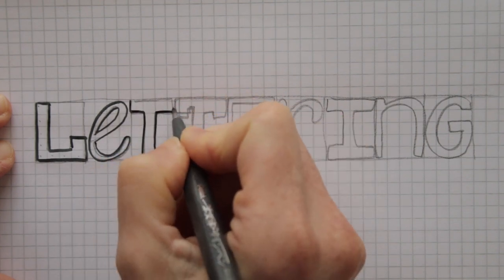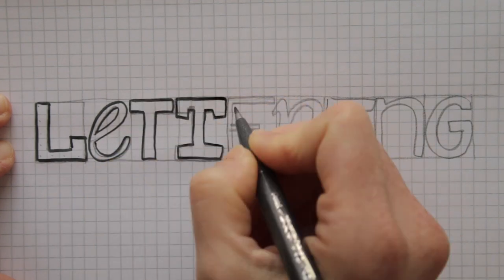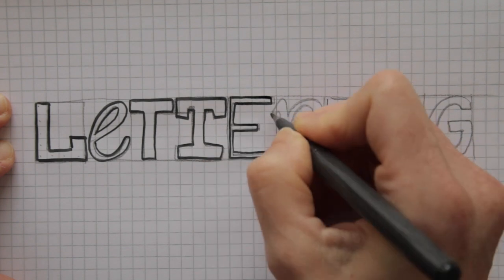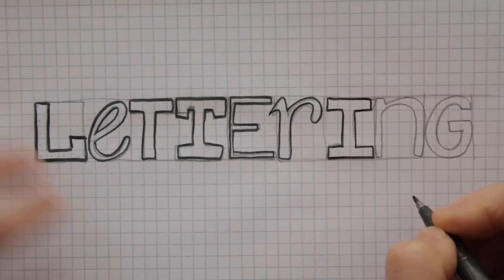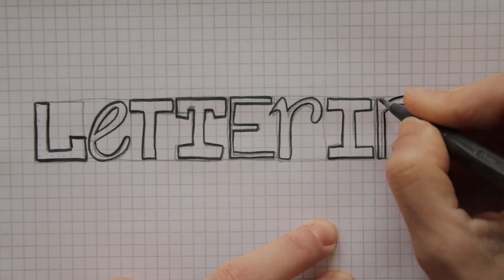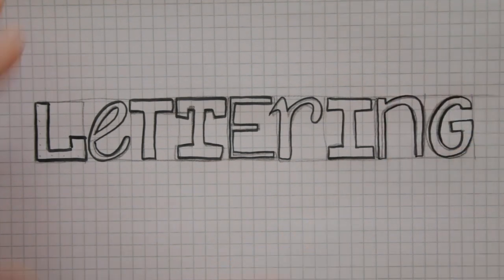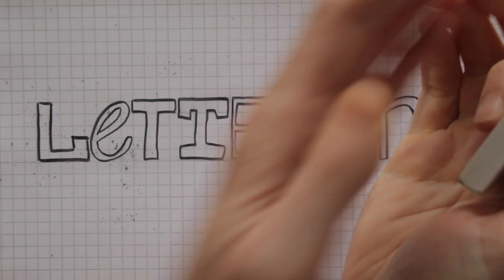When you draw in pencil first, and then trace your letters in pen or marker, wait a little bit before you start erasing the pencil lines. The ink needs to be dried completely, otherwise it will stain your drawing.